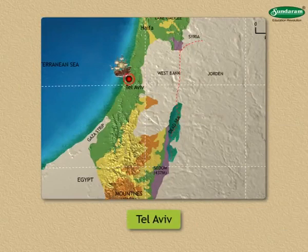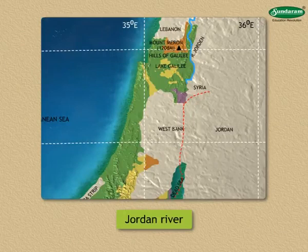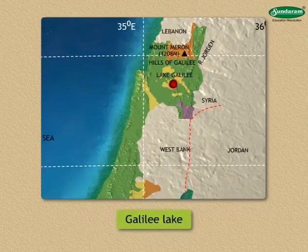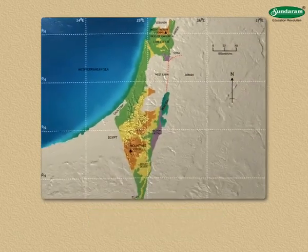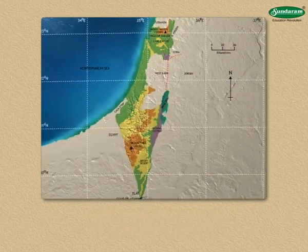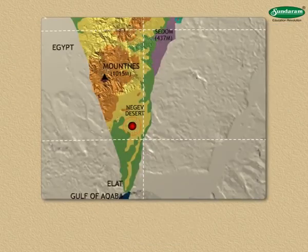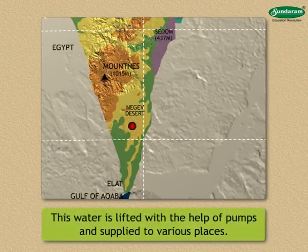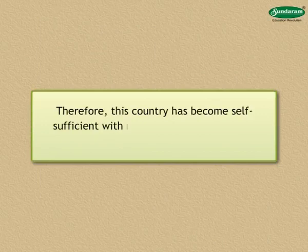The Jordan River, which flows along the Jordan-Israel boundary, is important for water resources. The Galilee Lake in the north is the biggest freshwater lake in the country. Israel has succeeded in carrying water through pipes, canals, and tunnels up to the Negev Desert in the south, where water is lifted with pumps and supplied to various places. Therefore, this country has become self-sufficient with respect to water, though it lies in a desert region.